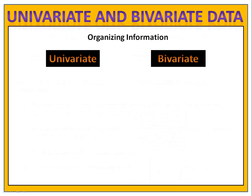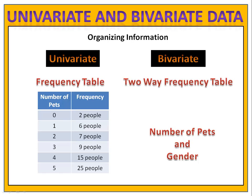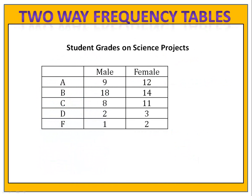Organizing information is very easy if you use the right tools. With univariate data, we saw we could use a frequency table — we'd make a list of the number of pets and indicate how many people had that number. With bivariate data, such as the number of pets and the gender of the person, we use a two-way frequency table. In this table, we have the number of males and females who got each grade on a science project.